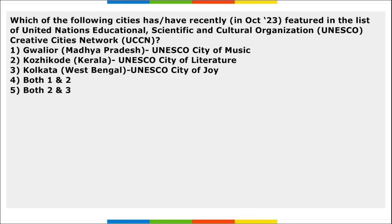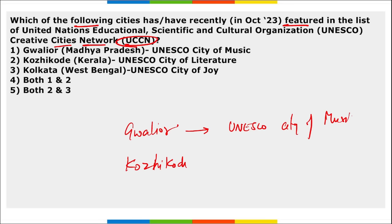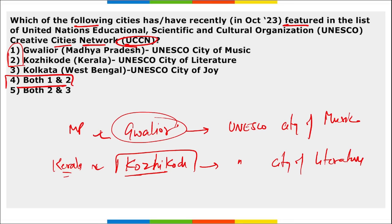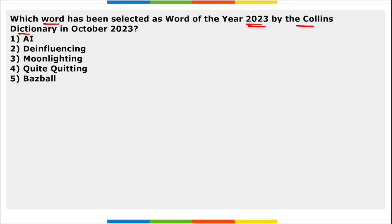Two Indian cities recently featured in UNESCO's Creative Cities Network: Gwalior (Madhya Pradesh) and Kozhikode (Kerala). Gwalior has been named UNESCO's City of Music, while Kozhikode is designated the City of Literature. Collins Dictionary selected AI (artificial intelligence) as the Word of the Year for 2023.